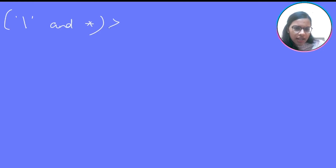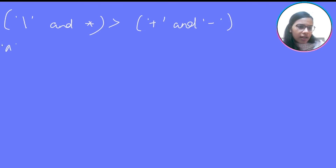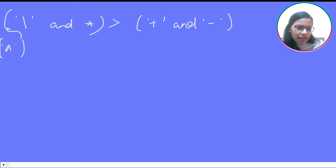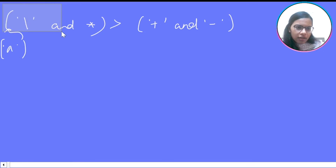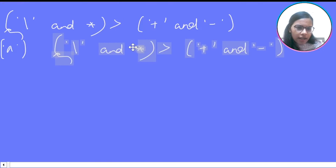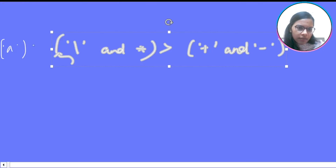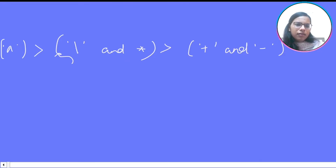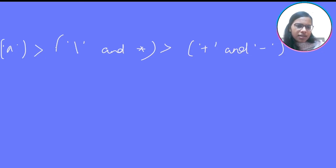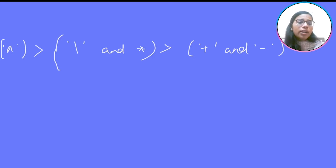What is the precedence? The precedence of division and multiplication is greater than the precedence of plus and minus. And the precedence of the exponential operator is greater than multiplication and division. This is the precedence of all the operators.